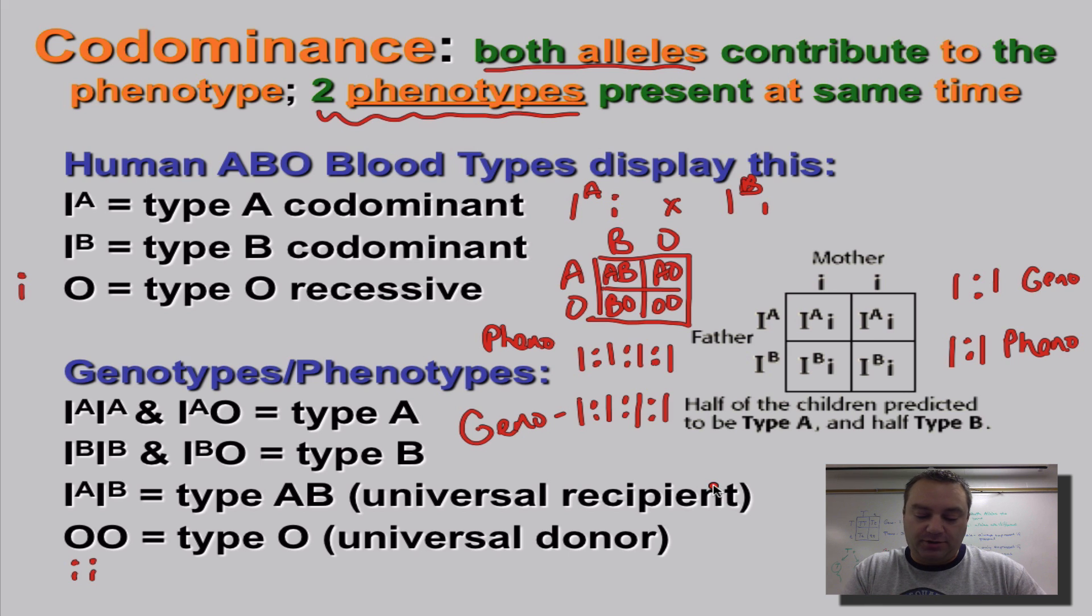Now, remember the difference between the two. In incomplete dominance, we have a blending of the traits or a blending of the alleles, and you're going to see that in the heterozygous individuals. In codominance, the heterozygous individuals are going to express both traits. Like, as you can see here, in the type AB person, they're going to have both the A marker protein and the B marker protein because blood types are dealing with marker proteins. We've got three more episodes to go in this series. So until next time, we're going to catch you on the flip side.